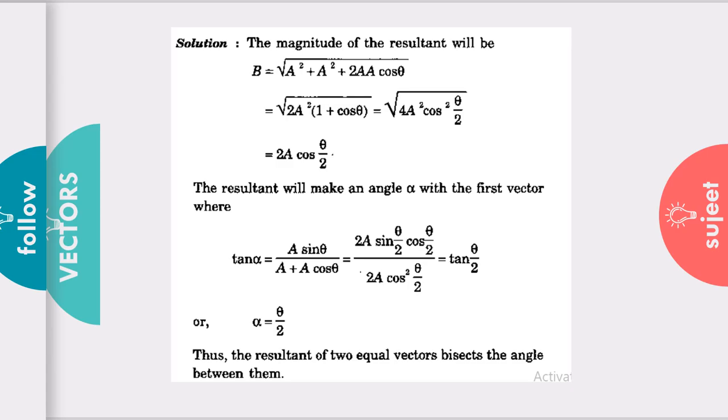Now we need to find the angle, because without the angle we cannot say this is a vector. Tangent α = (A sin θ)/(A + A cos θ). Using the formula and basic trigonometry, we get α = θ/2.